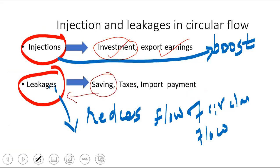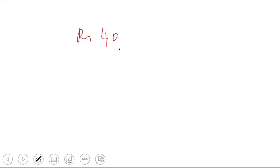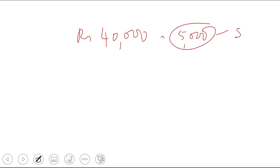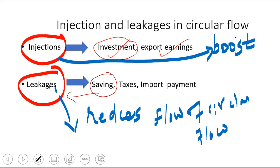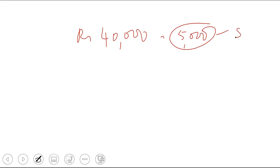Someone is asking why saving is a leakage. For example, if I get 40,000 rupees salary and I am saving 5,000 rupees every month, then my spending decreases. When spending decreases, that much money is not circulating in the economy — so saving is considered a leakage. The more someone saves, the less economic activity there will be, because people spend less.